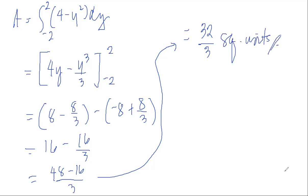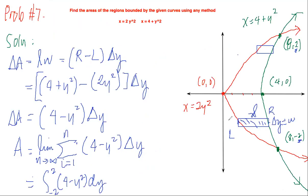The area of the shaded region, the area of this region is equal to 32 over 3. So we have already found the area of the region, and I hope you get the same answer.